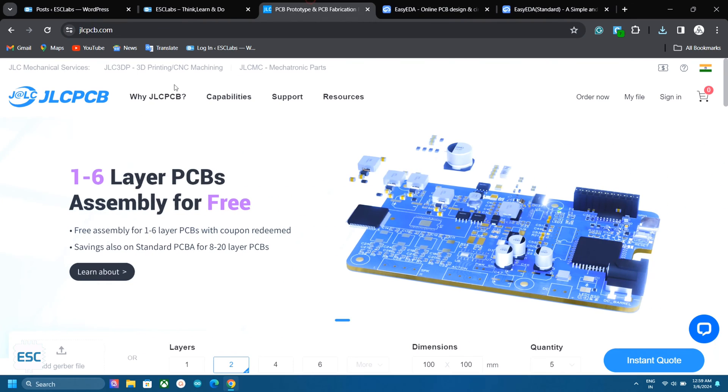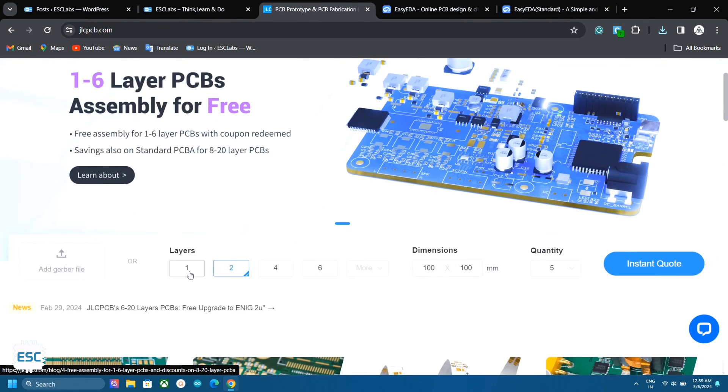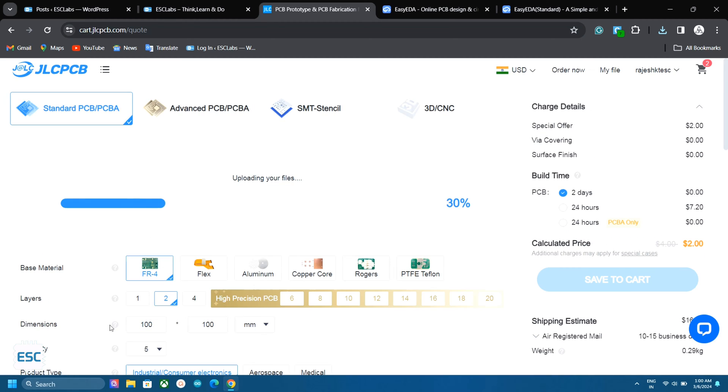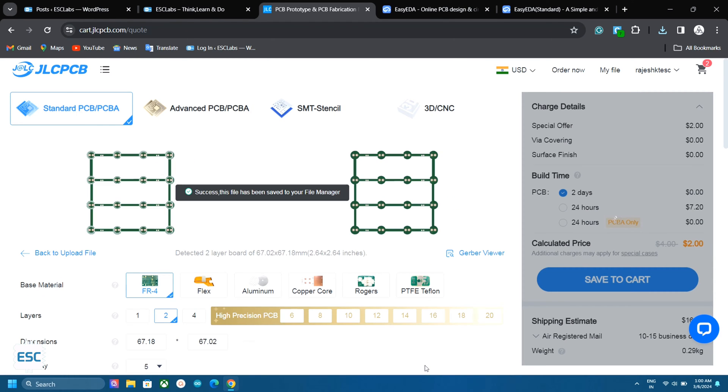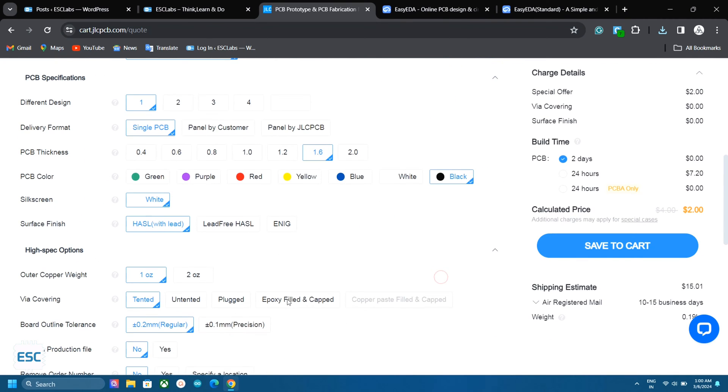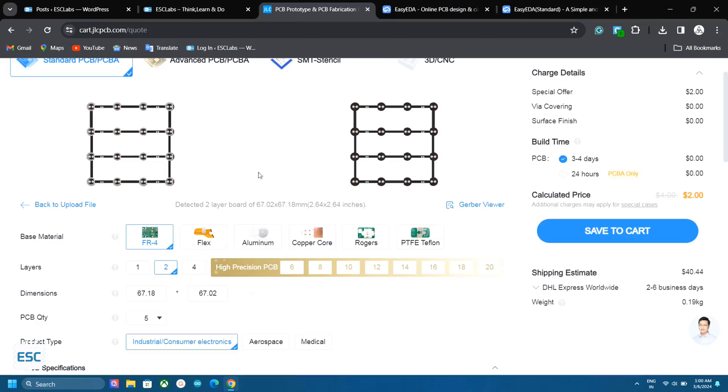To fabricate the PCBs, I went to JLCPCB.com. They are the best PCB manufacturers from China and they offer only $2 for 5 PCBs and their PCB assembly starts from $0. You can order PCBs very easily. Click on order now and select the Gerber file. Then we can customize the PCB if we want like color, thickness, finish, etc. After that we can select the shipping method and we can place the order.